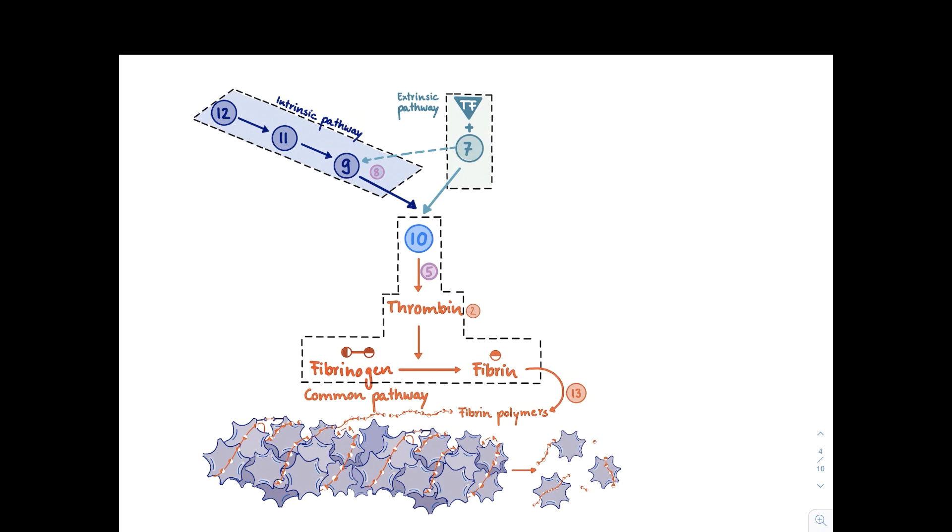There's also another way how you can activate factor 10. And this is called via the intrinsic pathway. It is called intrinsic pathway because it is intrinsic in our blood. So all factors that are required to activate it are intrinsic, found in the blood. And this requires a molecule called kininogen together with kallikrein and they can form a complex with factor 12. Factor 12 becomes activated. This activates factor 11 and this activates factor 9. And then factor 9 with factor 8 can activate factor 10.